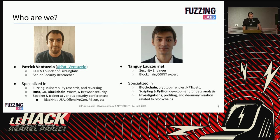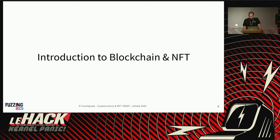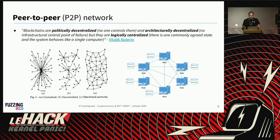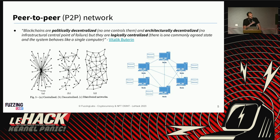Quick introduction to blockchain to make sure everyone is aligned. Don't be afraid — I often hear people say blockchain is complicated, but if you know how a classical server works and a bit about VM execution, JIT, or compilation, it's basically a mix of the two. A blockchain is essentially a peer-to-peer network with multiple nodes communicating with each other through what we call consensus.